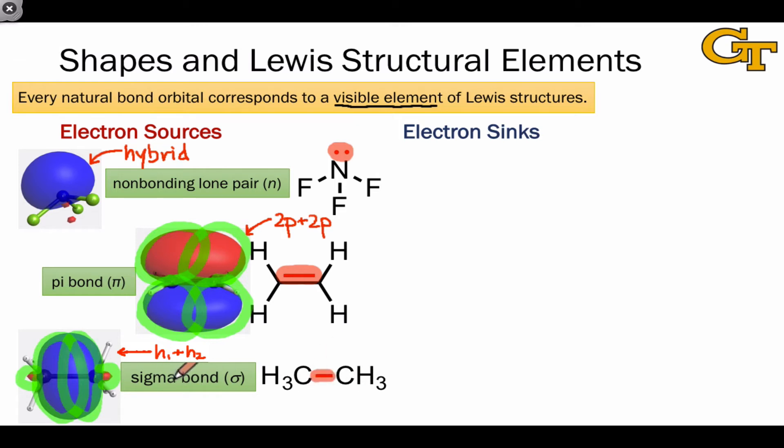Notice that the Lewis structural elements on the right correspond to the electron sources we've already talked about. These are places where electrons reside within Lewis structures. We can think of the orbitals as electron sources as well, and thinking about the orbitals rather than just the Lewis structural elements gives us insight into, for example, how reactions occur spatially or how electrons flow.